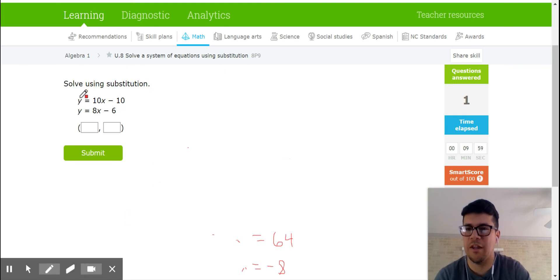Substitution still works here. What I need to see is that this first function has been solved for y. My second function has also been solved for y. So I can actually set both of them equal to each other. So I'm going to say 8x minus 6 is equivalent to 10x minus 10. I'm going to knock out this equation, I'm not going to show all the steps just for time's sake.